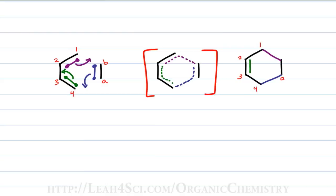That's the pattern, one, two, three, four, A, B in a ring with a pi bond between two and three.